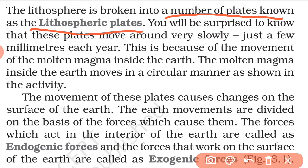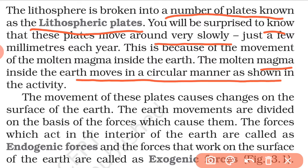When they are small, they are called lithospheric plates. You will be surprised to know that these plates move around very slowly. The molten magma inside the earth moves in a circular manner as shown. The movement of these plates causes changes on the surface of the earth.